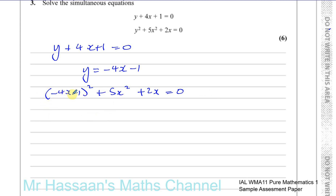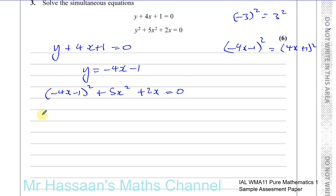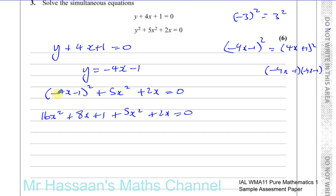Squaring minus 4x minus 1 is the same as squaring 4x plus 1, since minus 3 squared equals 3 squared. Expanding: minus 4x times minus 4x gives 16x squared, then 2 times minus 4x times minus 1 gives plus 8x, and finally plus 1. So the expansion is 16x squared plus 8x plus 1, plus 5x squared plus 2x equals 0. It's as if we just expanded 4x plus 1 squared.